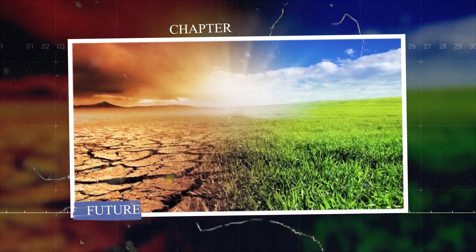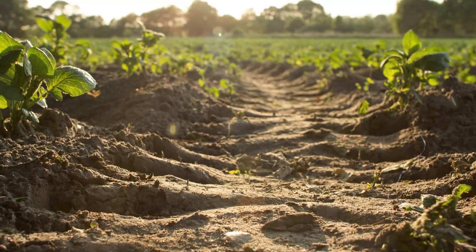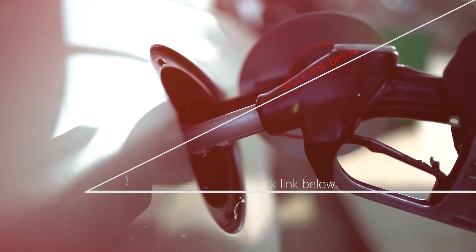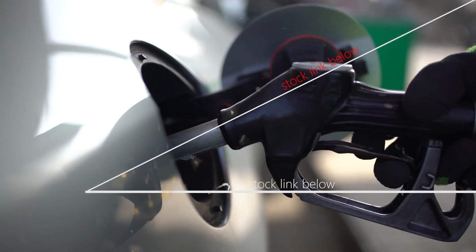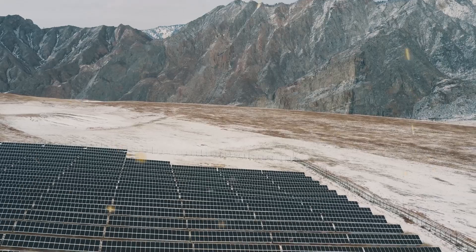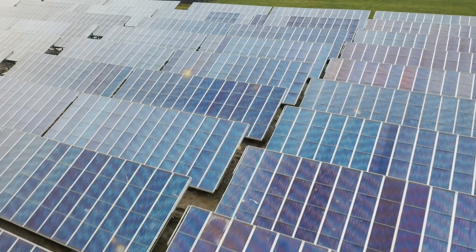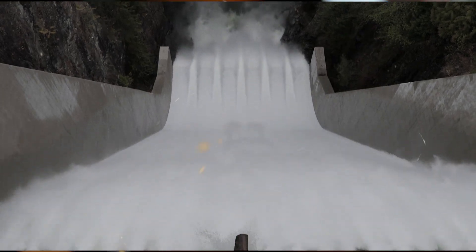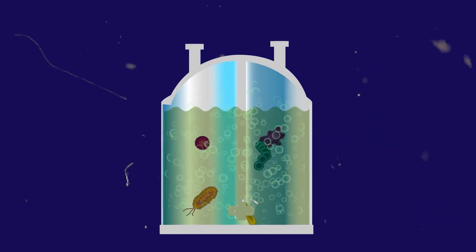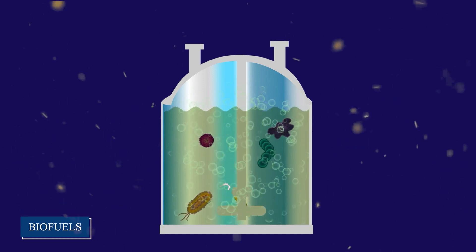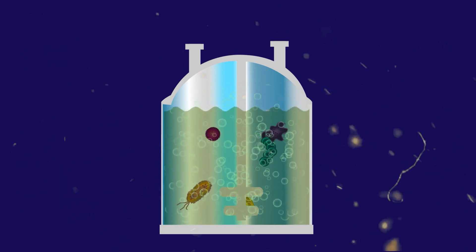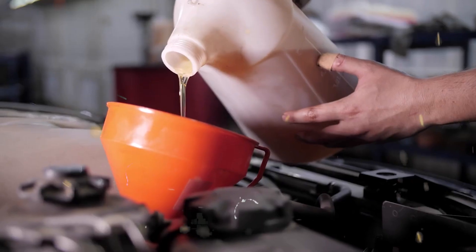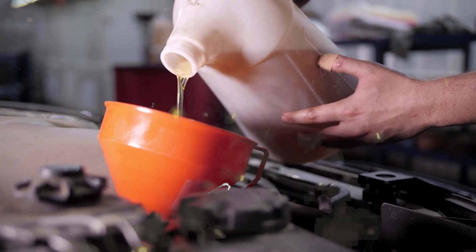As worries about climate change and the long-term health of the environment grow, more people want to look into renewable fuels and energy sources to use less petrol. Solar, wind, and hydroelectric power are all examples of renewable energy sources that are being worked on as options to fossil fuels. Biofuels made from organic materials like plants and algae are being studied as possible alternatives to oil for cars.